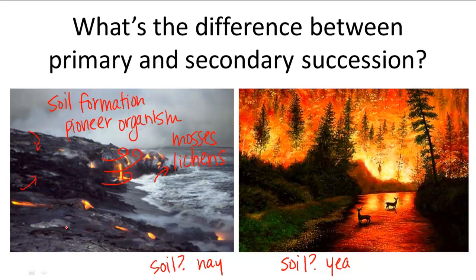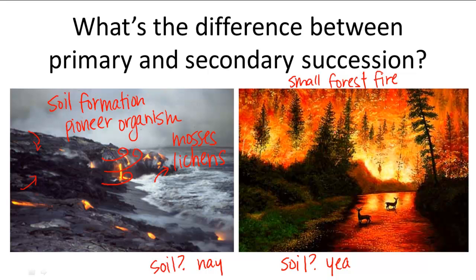Secondary ecological succession can occur after a small forest fire or after a logging company clears a piece of land. When this fire burns down the trees, it still keeps the soil intact. So it doesn't have to go through all the processes that primary succession does for soil formation. It doesn't have any pioneer organisms because there are already organisms within and around the soil that are residues from the old ecosystem. Depending on how much is left of the old ecosystem, secondary ecological succession can start in the middle of succession and grow from there into the final climax community.